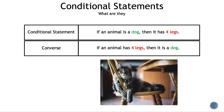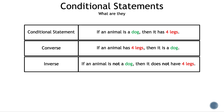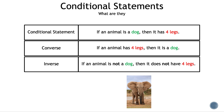The next statement we're going to introduce is inverse. With inverse, the hypothesis and the conclusion remain, but we negate them. The inverse statement is: if an animal is not a dog, then it does not have four legs. This is not always true — for instance, an elephant is a counter example for this inverse statement.